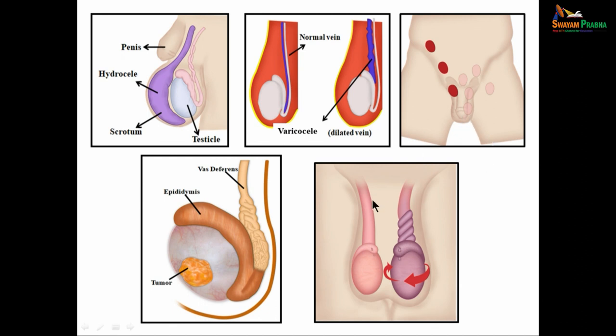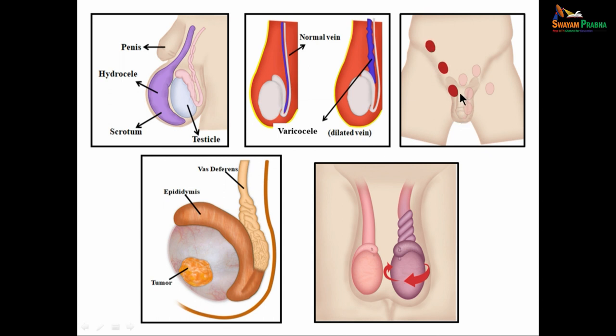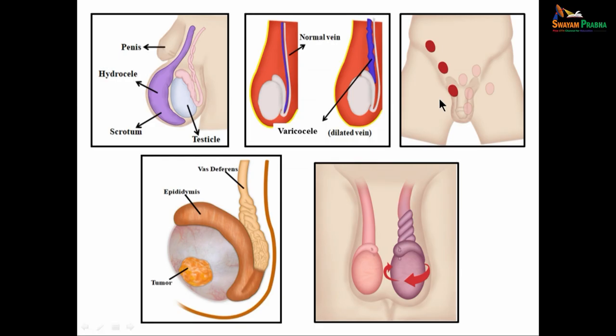More interestingly, the testes is an organ which develops intra-abdominally and at a later part of development descends into the scrotum. Due to some reasons, sometimes the testes may not descend into the scrotum. This picture shows the testes present intra-abdominally. Sometimes the testes may not descend at all — that we call undescended testes. Sometimes it may deviate from its normal course and be found elsewhere — that we call ectopic testes. I will discuss these clinical aspects in more detail at the later part of my lecture.